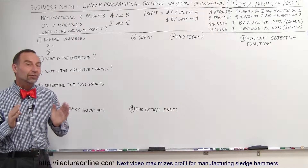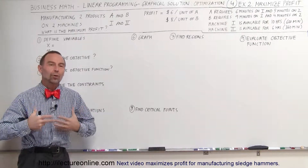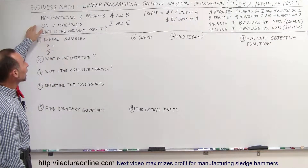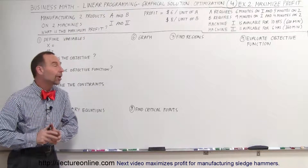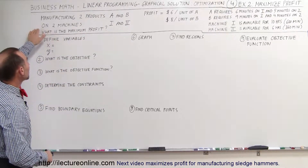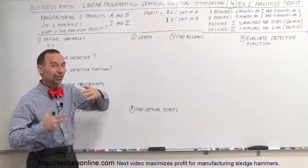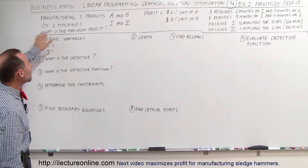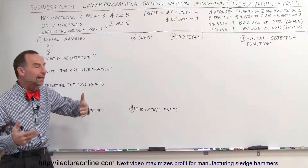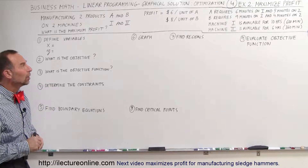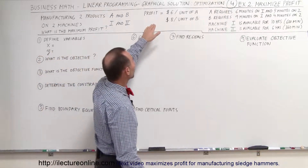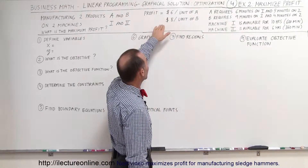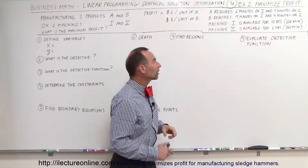Welcome to Electro Online. Here's another example of how to maximize or minimize a certain aspect in business. We're dealing with a manufacturing plan that produces two products, product A and product B, manufactured on two different machines. We're supposed to find the maximum profit to be made per day. Profit is $6 for each unit of product A and $8 for each unit of product B.